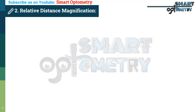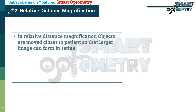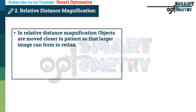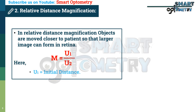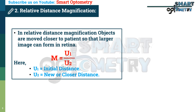In relative distance magnification, objects are moved closer to the patient so that a larger image is formed on the retina and the patient can see easily. The formula to identify relative distance magnification is M = U1 divided by U2, where U1 equals the initial distance and U2 equals the new or closer distance.